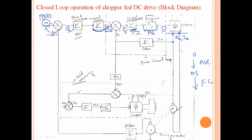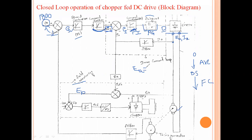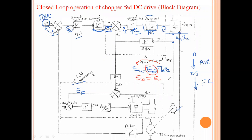For the field weakening loop, we need the back EMF of the motor, which is E_B. To calculate the back EMF, we use the formula: E_A = E_B + I_A × R_A. From this, the back EMF is E_B = E_A − I_A × R_A. So this is how we can calculate the back EMF. E_A is the armature voltage and R_A is the armature resistance.